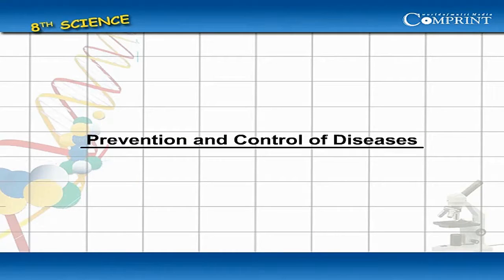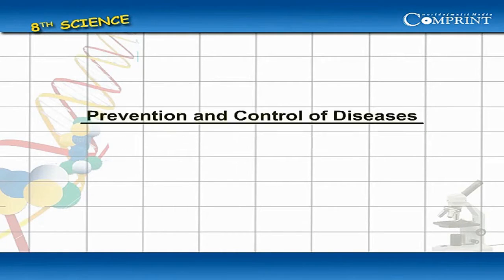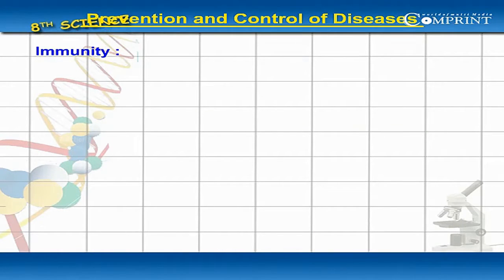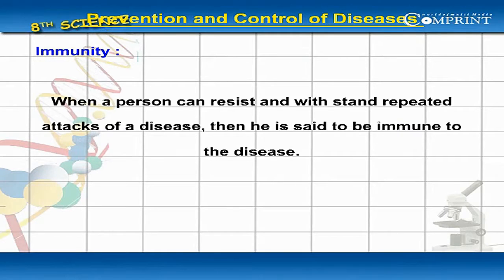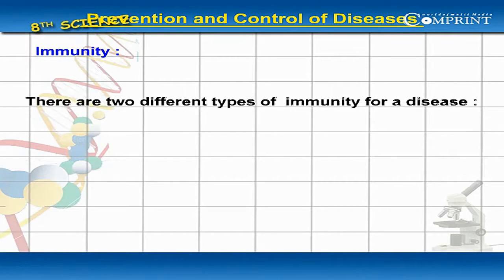Prevention and Control of Diseases: Immunity. When a person can resist and withstand repeat attacks of a disease, then he is said to be immune to the disease. There are two different types of immunity for a disease.